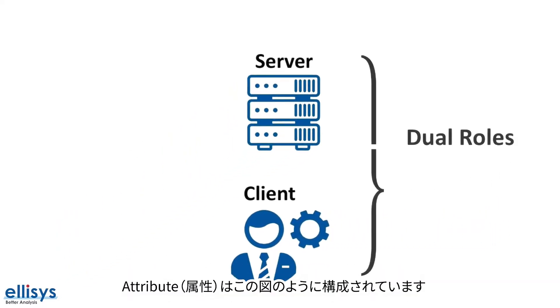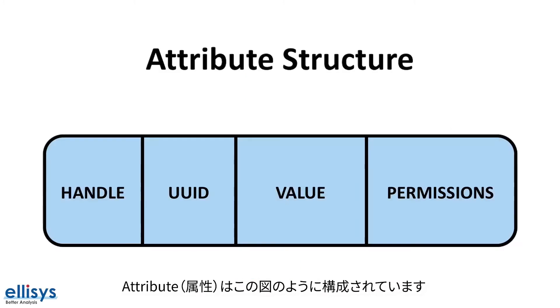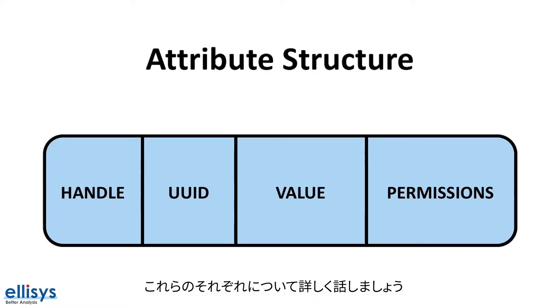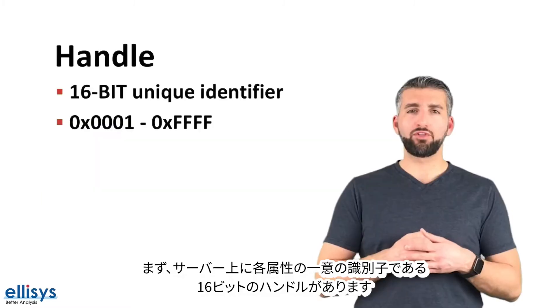An attribute is structured as follows. It includes a handle, an attribute type or UUID, a value, and a set of permissions. Let's talk about each of these in detail.